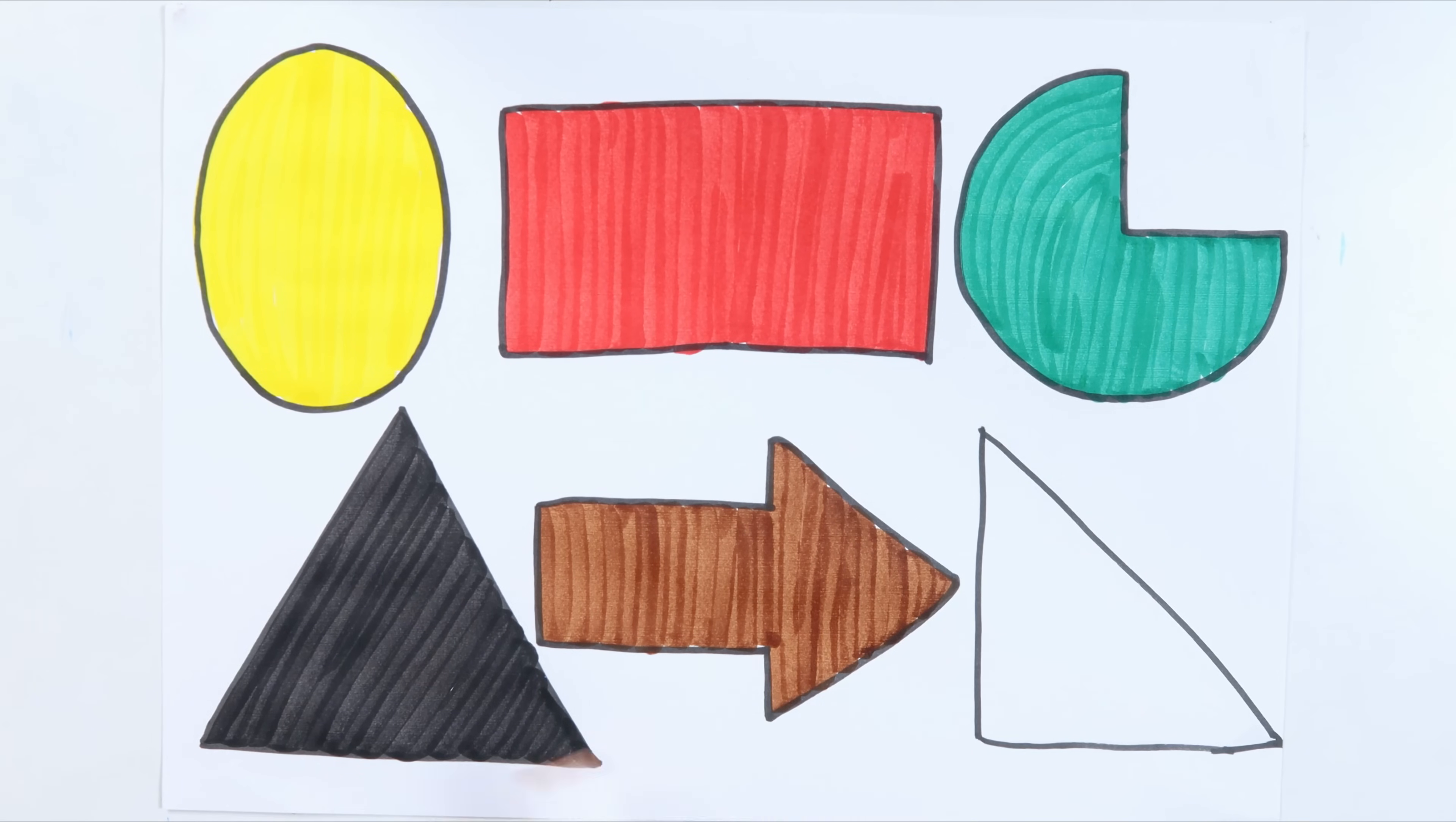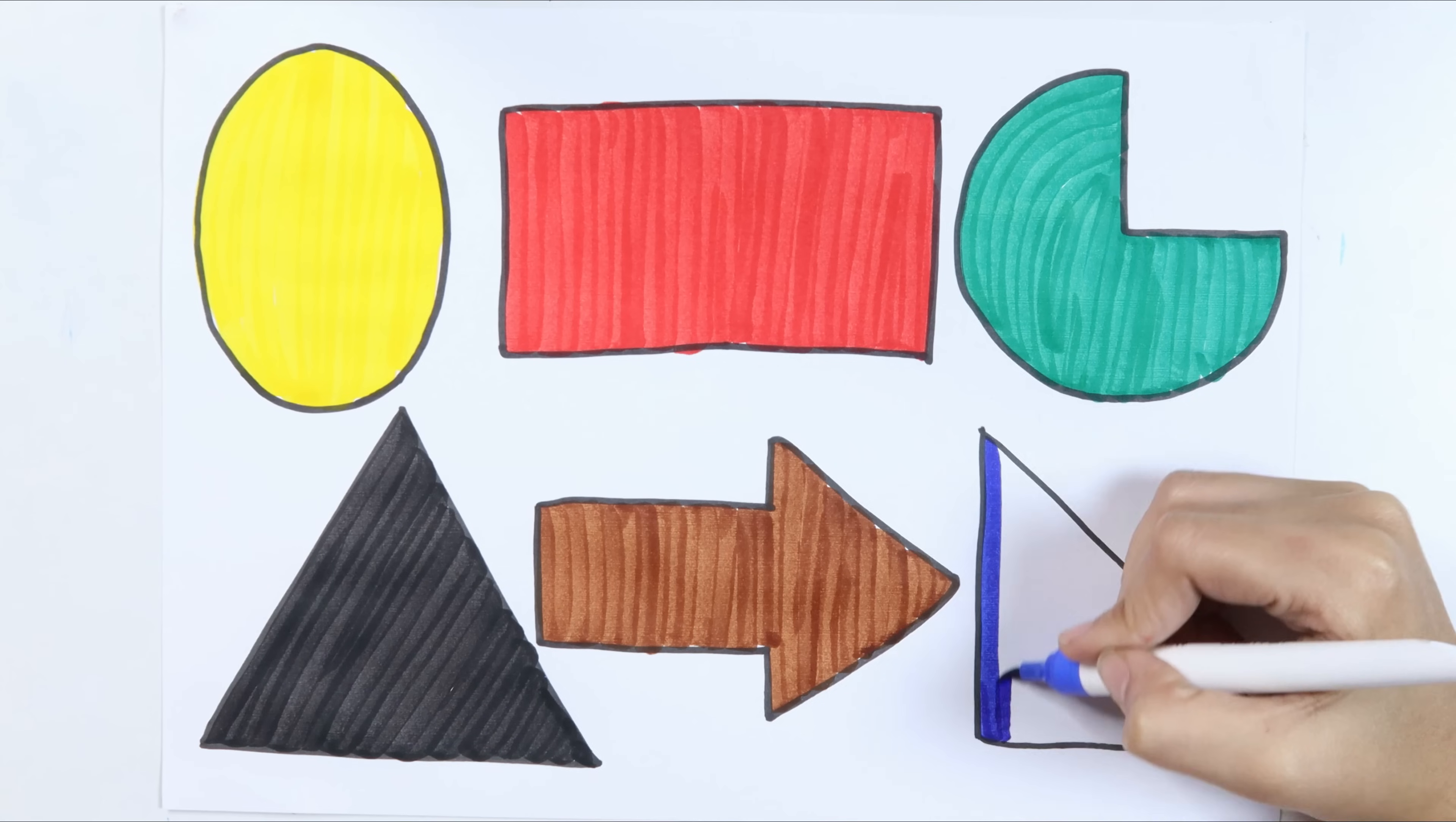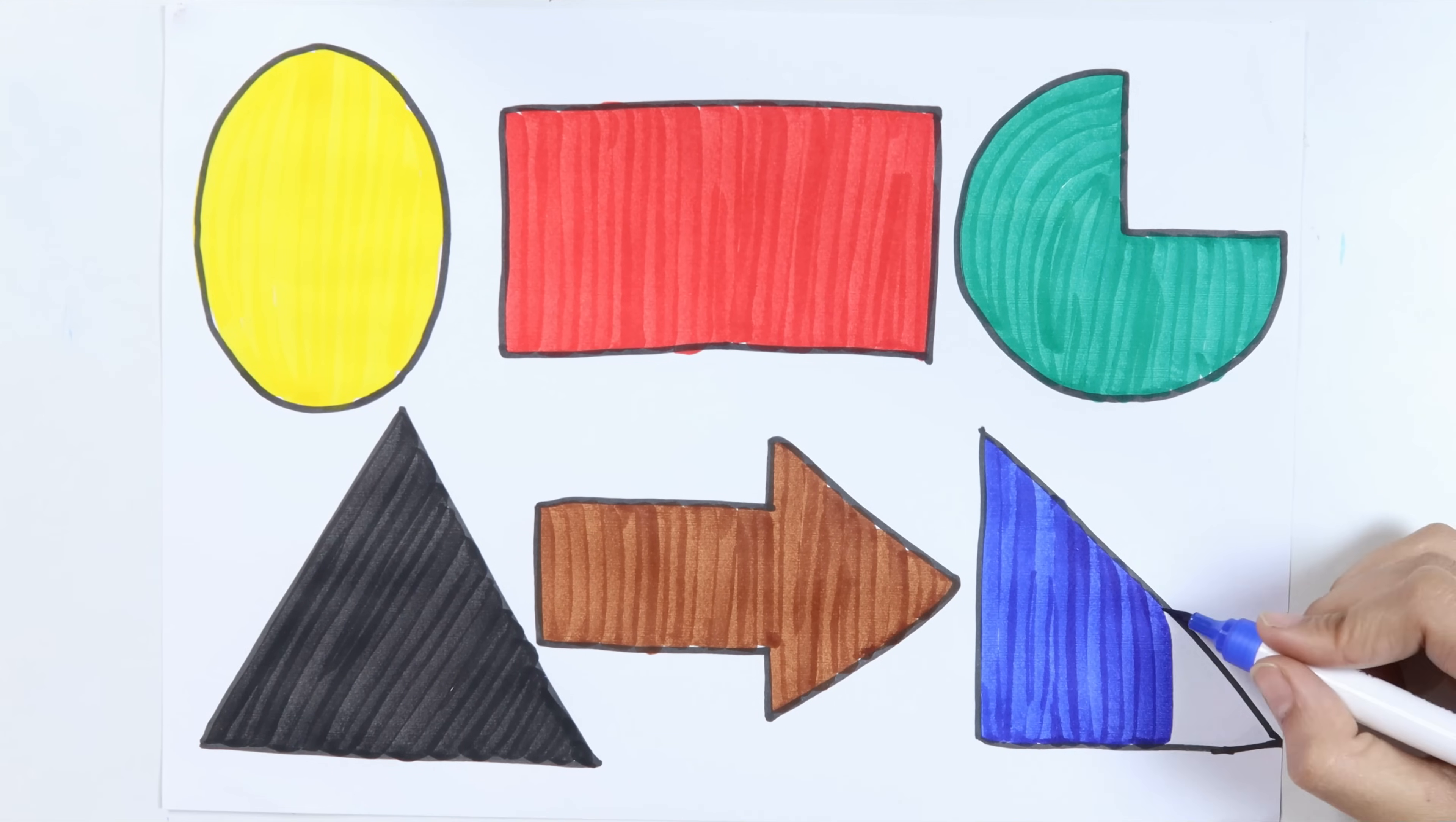Arrow, blue color. When the blazing sun is gone, when he nothing shines upon.